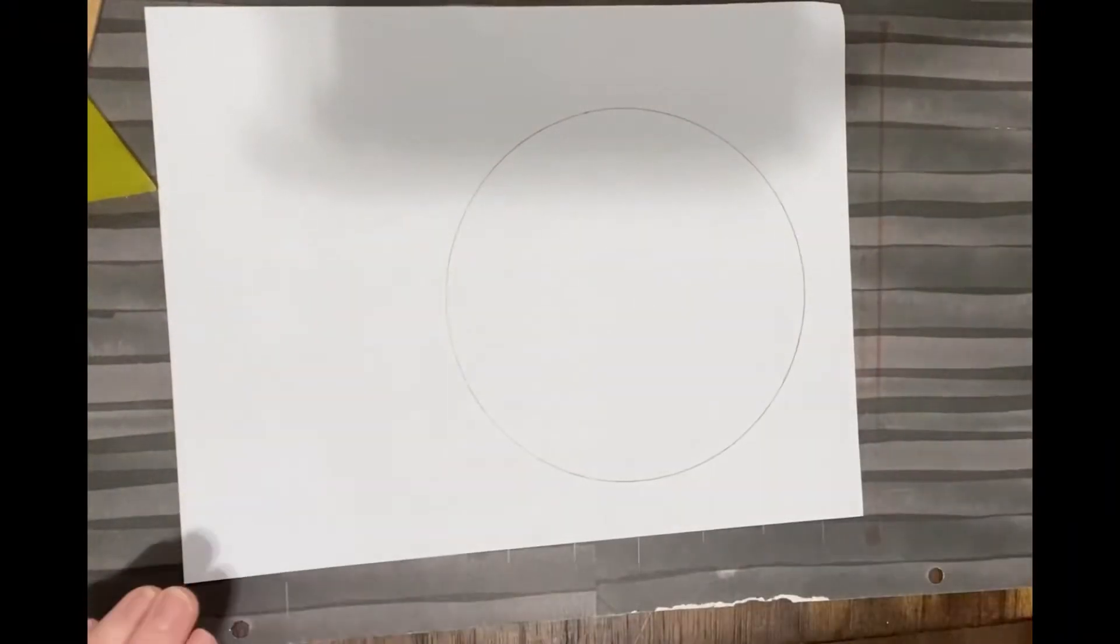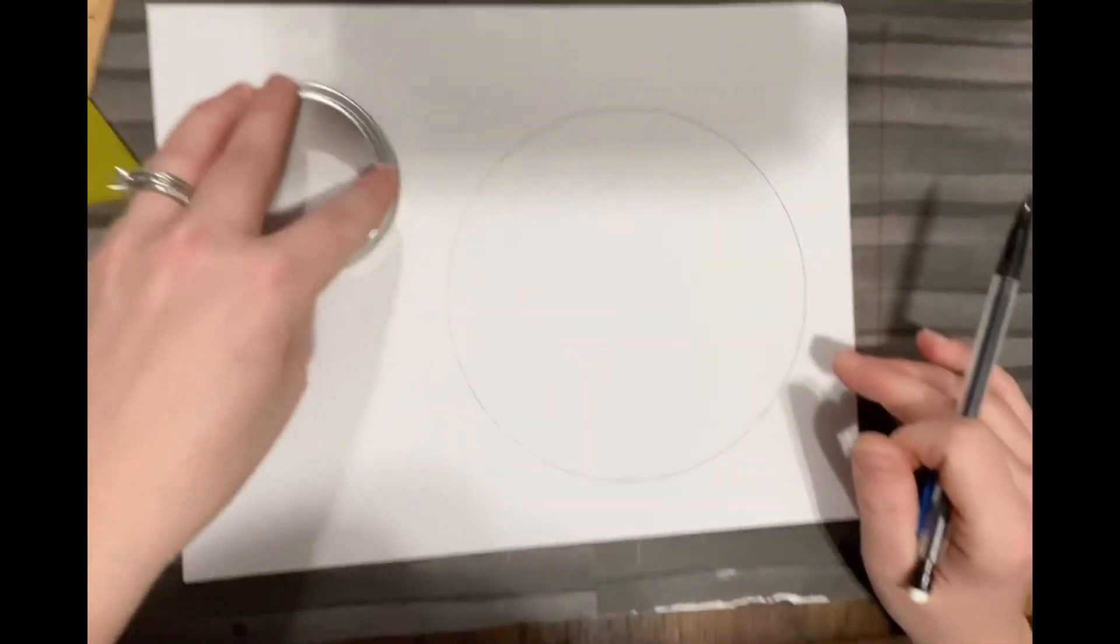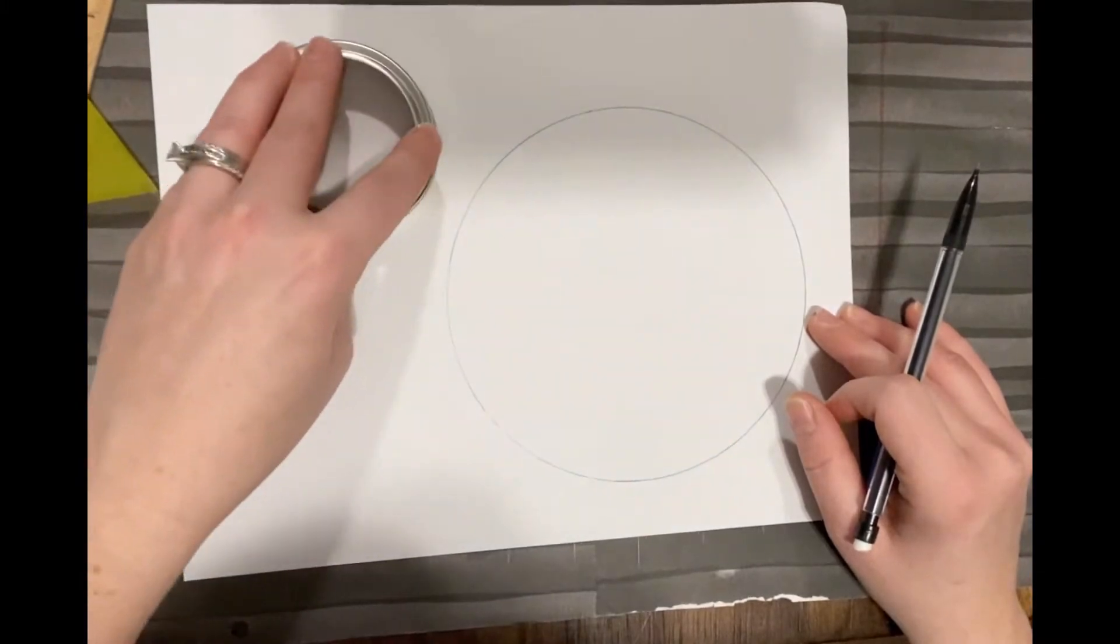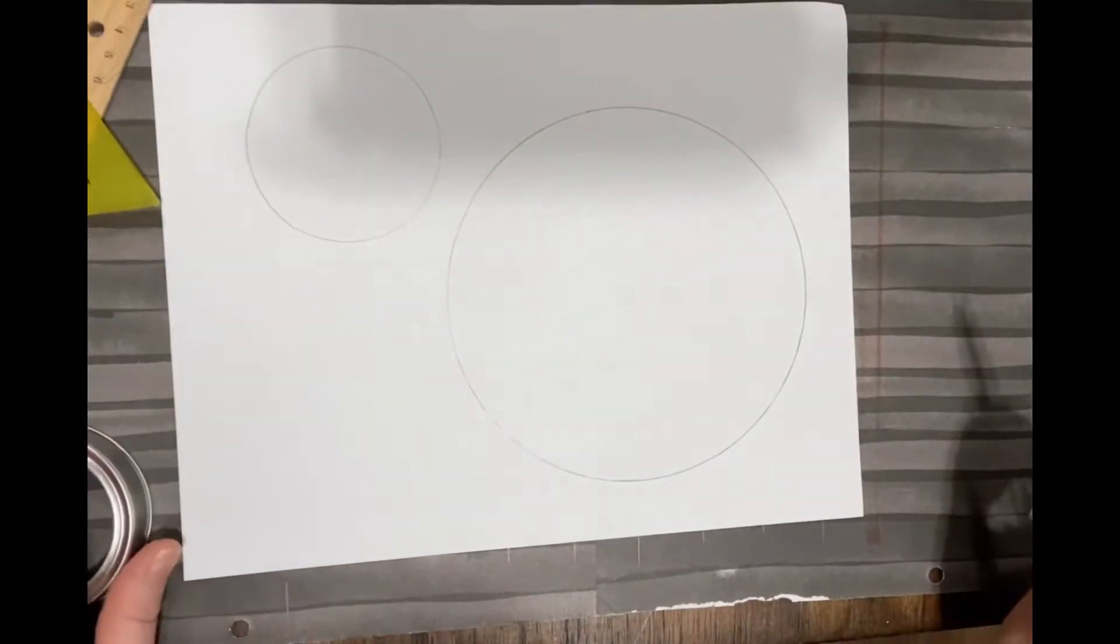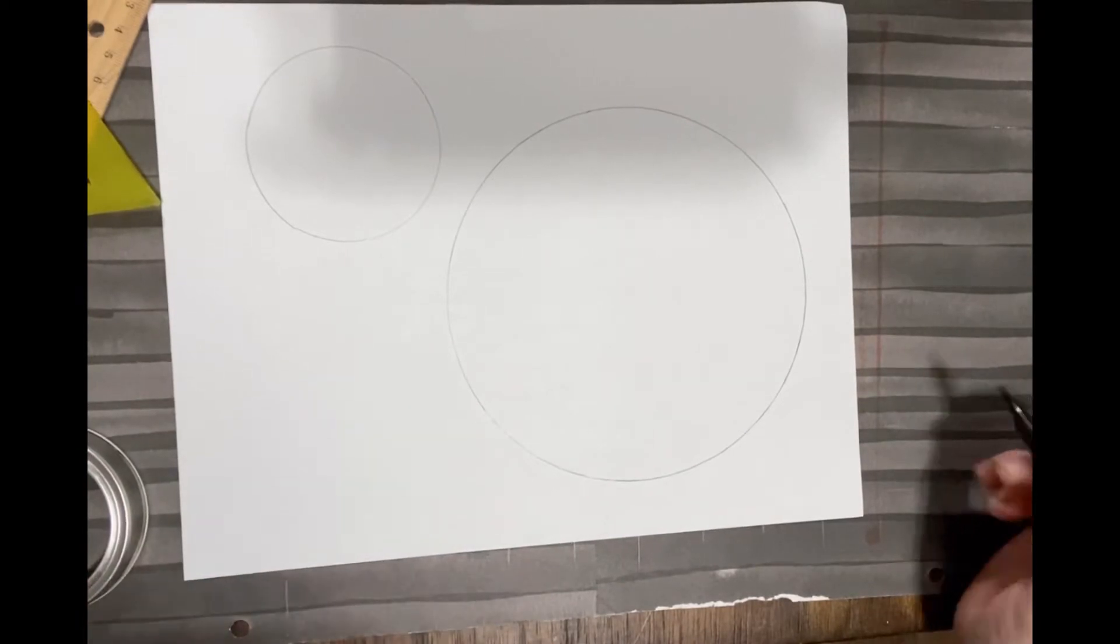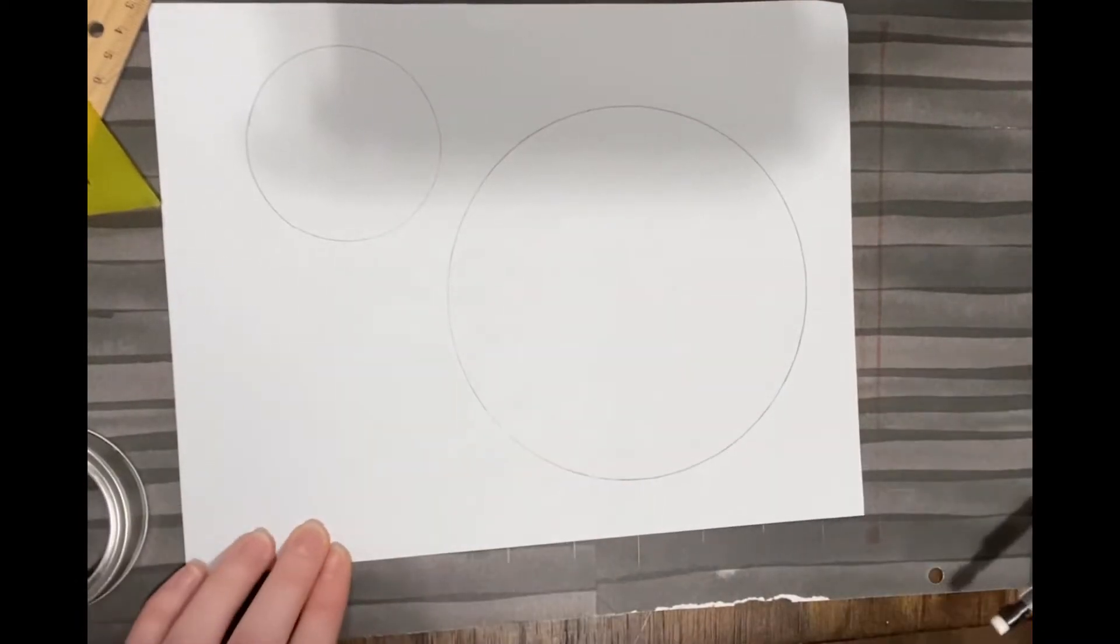Find some round things around the house—maybe a bowl, a lid—it can be a variety of sizes. You can draw just one circle or multiples. Next you'll need a strip of paper to use as a straight edge or a ruler.